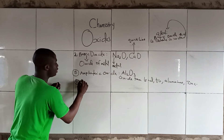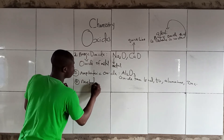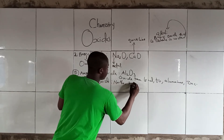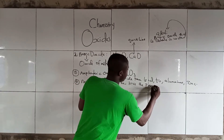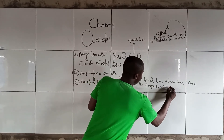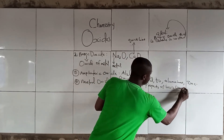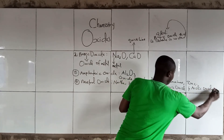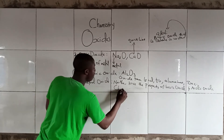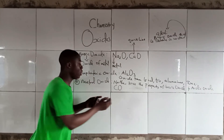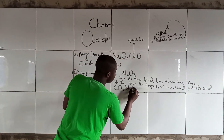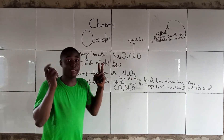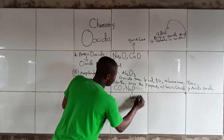The fourth type is the Neutral Oxide. These are oxides that have neither the properties of Basic Oxides nor Acidic Oxides. Examples are Carbon Monoxide, CO, and N2O — Dinitrogen Monoxide, popularly called Laughing Gas.